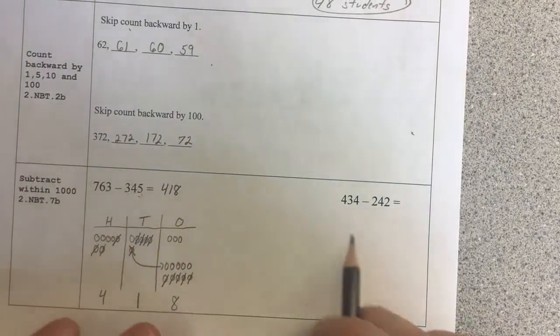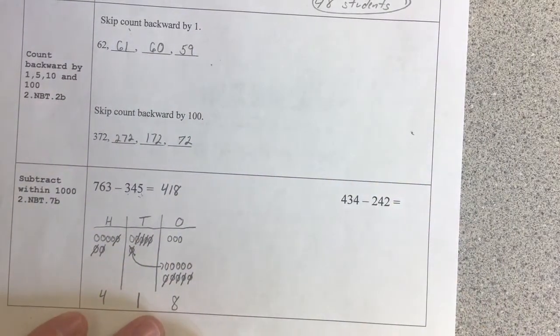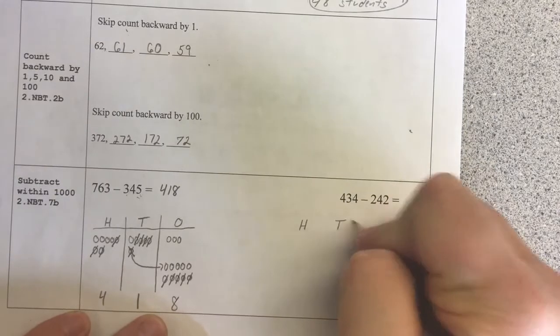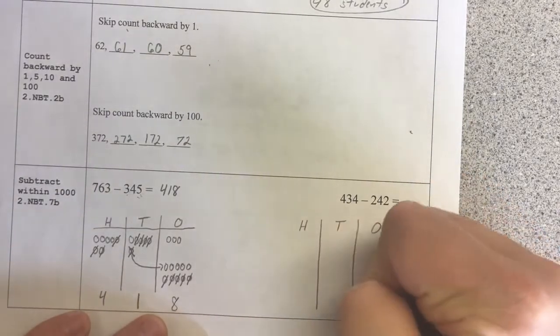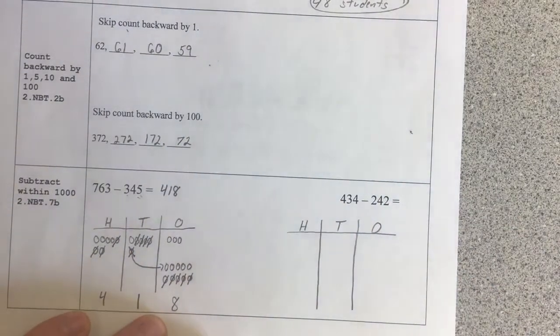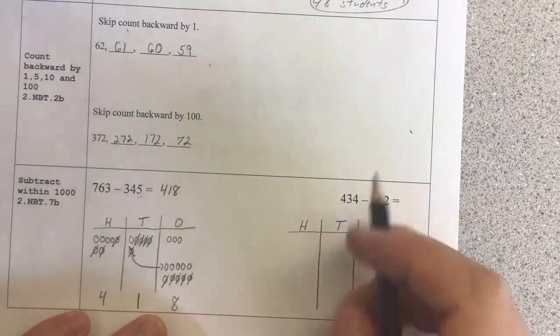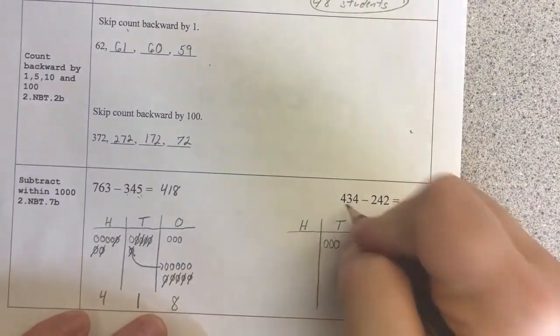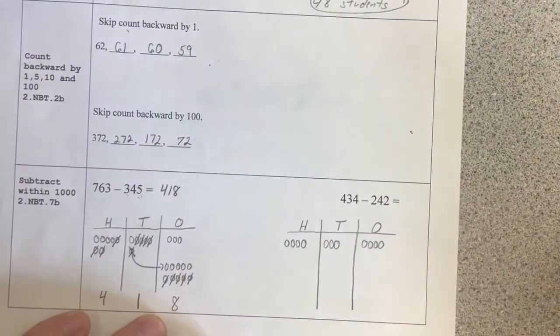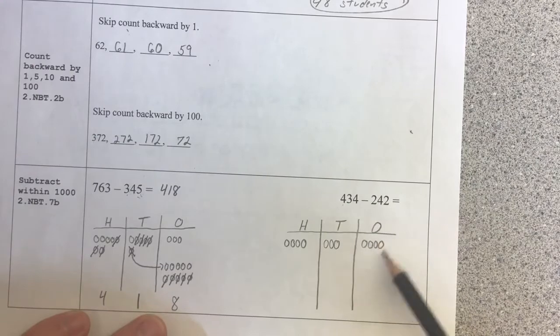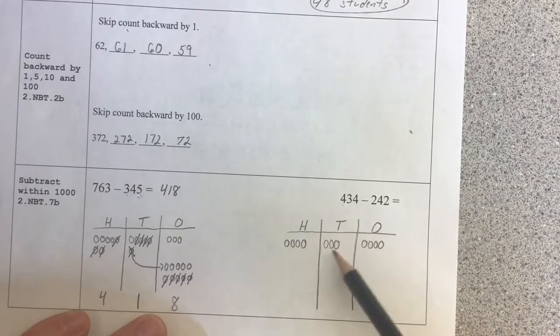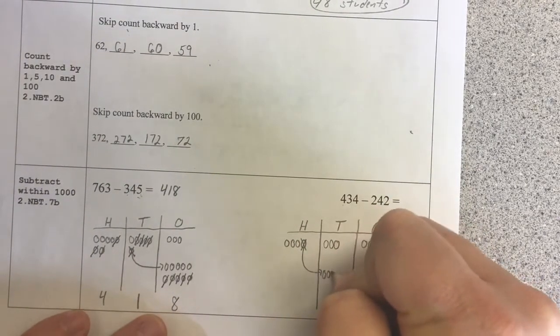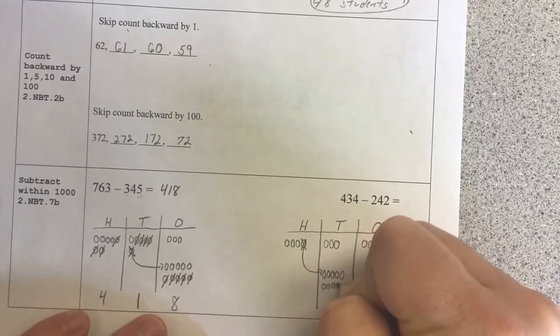Now, come on over here. 434 minus 242. So again, I'm going to stick with the place value chart this time. 100s, 10s, and 1s. First thing I do, build 434. And now I'm going to cross off 242. So first, 2 ones, I'm okay. 4 tens, so I'm going to need some tens here. So I'm going to cross off 100. Decompose it, bring it over. 1, 2, 3, 4, 5, 6, 7, 8, 9, 10.